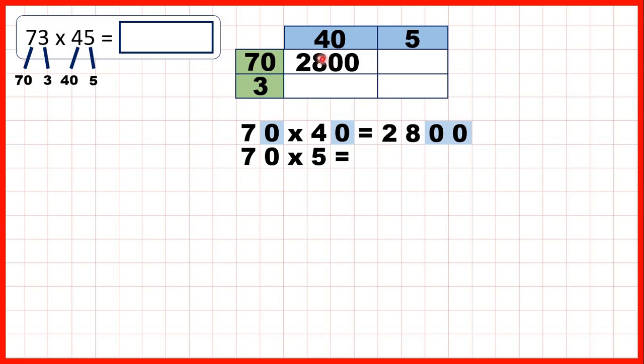For this box, we need 70 times 5. That's 350, because 7 times 5 is 35. And then, we need 1 end zero.